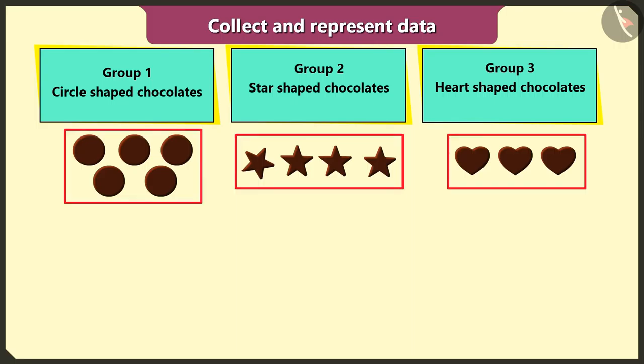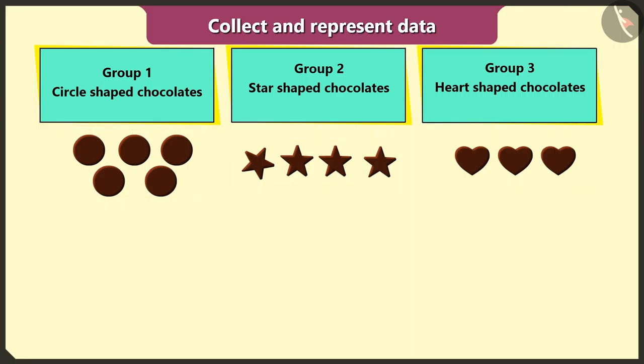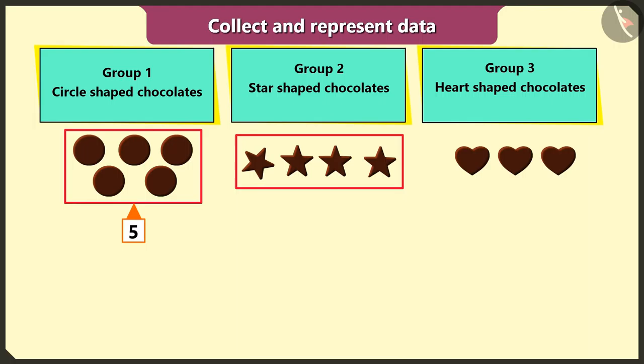Now I will count the chocolates in each group. In the first group, five circle shaped chocolates. In the second group, four star shaped chocolates. And in the third group, there are three heart shaped chocolates.